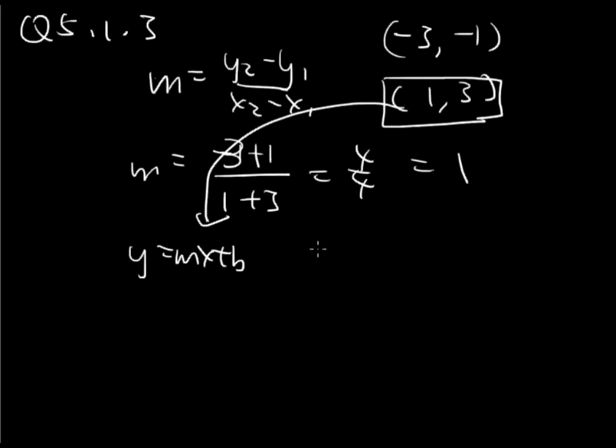So y is 3 equals the slope, 1 times the x we picked, which is 1, plus b. So 3 equals 1 plus b, subtract 1 from both sides, b equals 2.